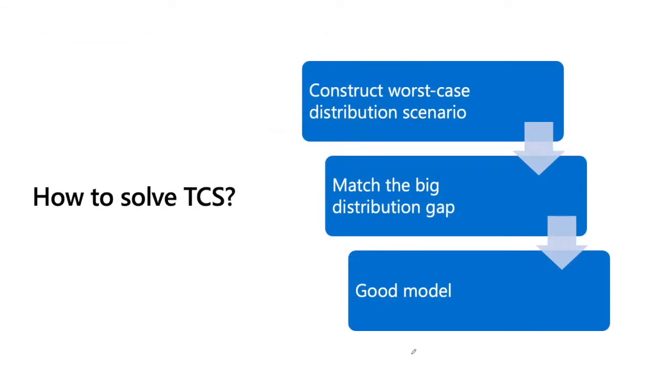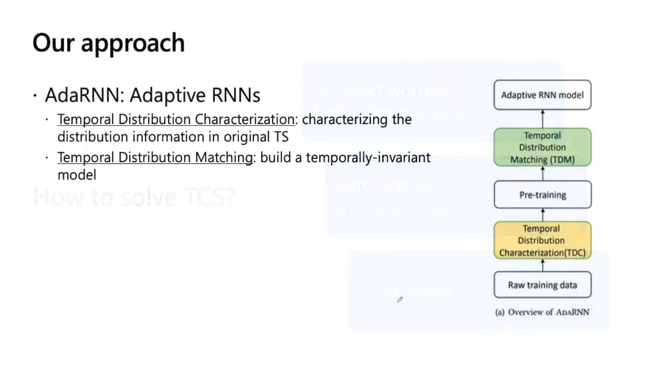So, how to solve this TCS problem? Basically, here is the big picture to solve it. First, we need to construct the worst-case distribution scenario. For example, the TCS problem can be constructed in many ways in many worst-case distribution scenarios. What is the biggest distribution gap between them? We call it the worst-case distribution scenario. If we have it, we can then match the big distribution gap between the worst-case distributions or the worst-case segments. And then we can get a good model. Accordingly, our approach called AdaRNN, where Ada refers to adaptive RNNs, consists of two modules. The first module is temporal distribution characterization, which means we can characterize the distribution information in the original time series data. Secondly, we can use temporal distribution matching to build a temporally invariant model to match the distributions and finally learn a good model.